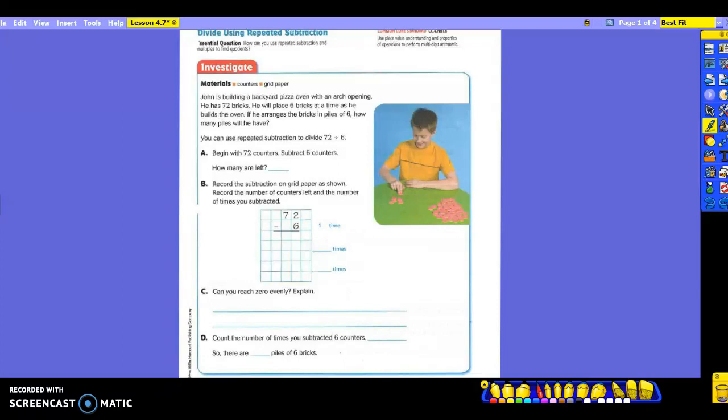Let's talk and read what they're talking about here. John is building a backyard pizza oven with an arch opening. He has 72 bricks. He will place six bricks at a time as he builds the oven. If he arranges the bricks in piles of six, how many piles will he have? You can use repeated subtraction to divide your 72 bricks. Divide by six. Let's go ahead and highlight your questions so you know what you're finding. We need to make sure we're using piles of six.